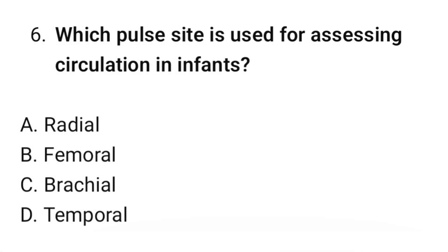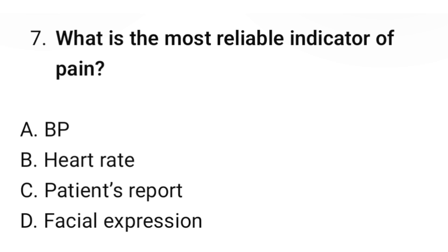Question number 6: Which pulse site is used for assessing circulation in infants? The correct option is C: Brachial. Question number 7: What is the most reliable indicator of pain? The correct option is C: Patient's report.